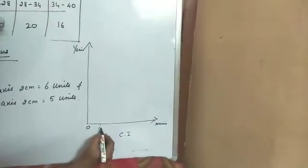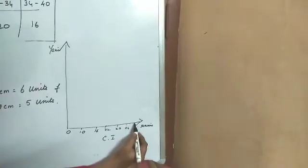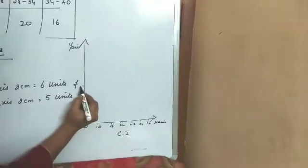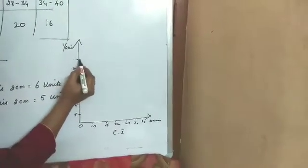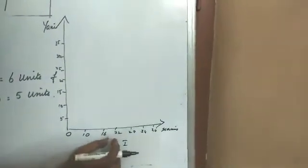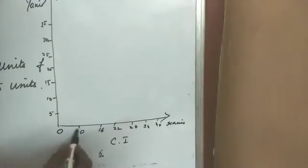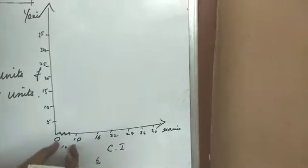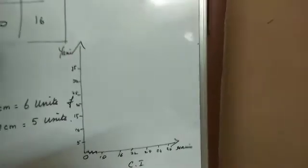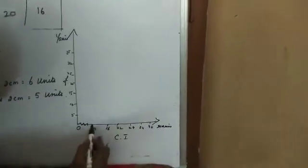Along the x-axis you have to take class interval, along the y-axis we have to take frequency. Then 0, 10, 16, 22, 28, 34, 40 and here 5, 10, 15, 20, 25, 30, 35. Then you have to see 10 to 16, size is 6, and here 0 to 10, so you have to break because this part is not equal to this. Construct rectangles with class intervals as bases and corresponding frequencies as heights. You will get the required histogram.